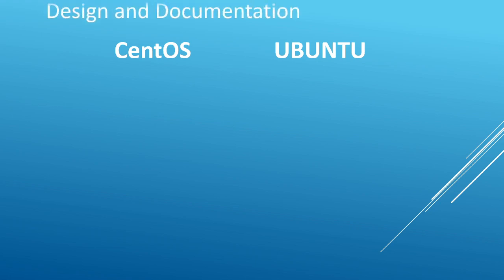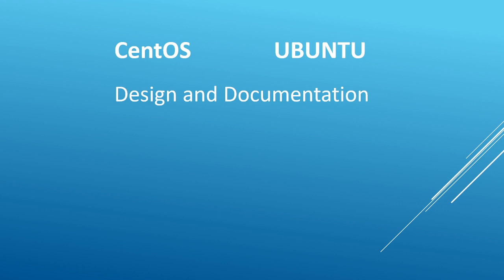The first thing we'll look at is design and documentation. CentOS can be considered an exact clone of the paid version of RHEL, that is Red Hat Enterprise Linux, which is mostly preferred for enterprise environments — the only difference is the brand and logo are removed. Ubuntu, on the other hand, is based on Debian architecture and is currently used in desktops, servers, smartphones, and tablets. It was launched by a UK company called Canonical Limited.